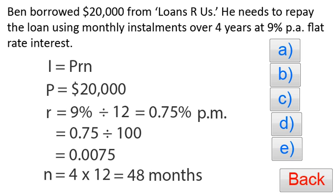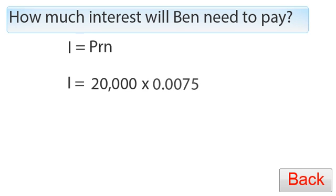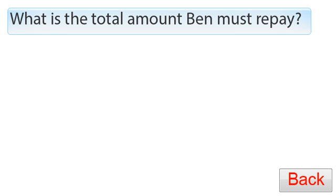To calculate how much interest Ben needs to pay, we use I equals PRN. Substituting in our values: I equals 20,000 times 0.0075 times 48. Multiplying these three values together gives us $7,200, meaning Ben will have to pay $7,200 in interest.